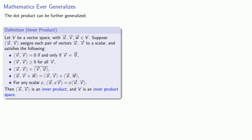If all of these things hold, then the function ⟨u, v⟩ is an inner product and our vector space V is an inner product space.